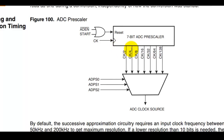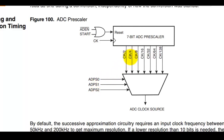This is the ADC prescaler block. These are the options available for the ADC prescaler. Selecting 0,0,0 divides the ADC clock by 2; selecting 0,0,1 divides by 4; selecting 0,1,0 divides by 8; selecting 0,1,1 divides by 16, and so on.